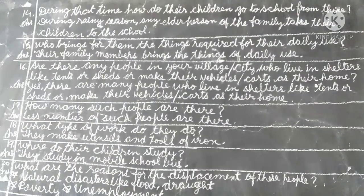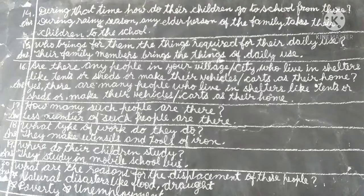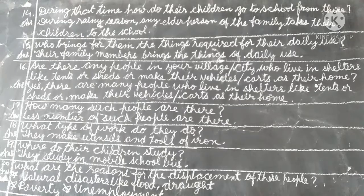Next, question 14: during that time, how do their children go to school from there? During rainy season, any elder person of the family takes their children to school. Question 15: who brings for them the things required for their daily use? Answer: their family members bring the things of daily use.